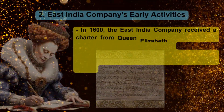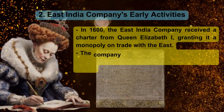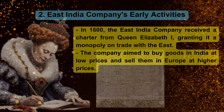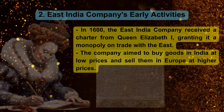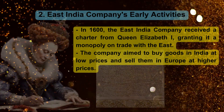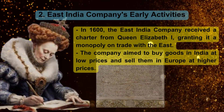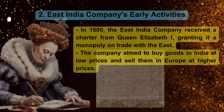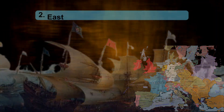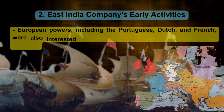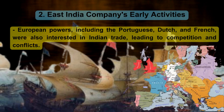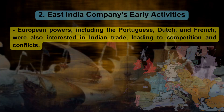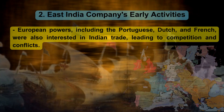East India Company's Early Activities. In 1600, the East India Company received a charter from Queen Elizabeth I, granting it a monopoly on trade with the East. The company aimed to buy goods in India at low prices and sell them in Europe at higher prices. European powers, including the Portuguese, Dutch, and French, were also interested in Indian trade, leading to competition and conflicts.